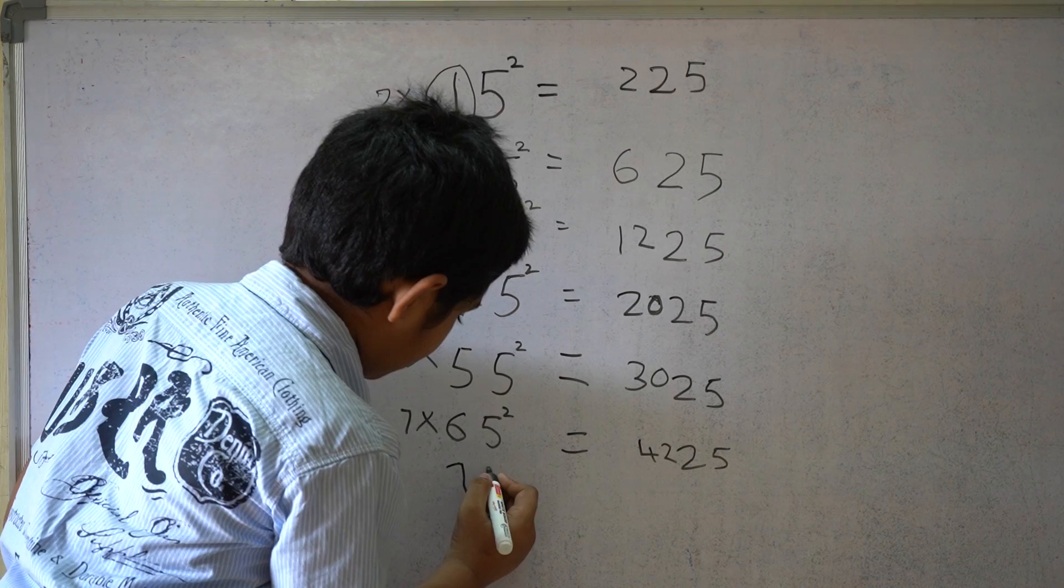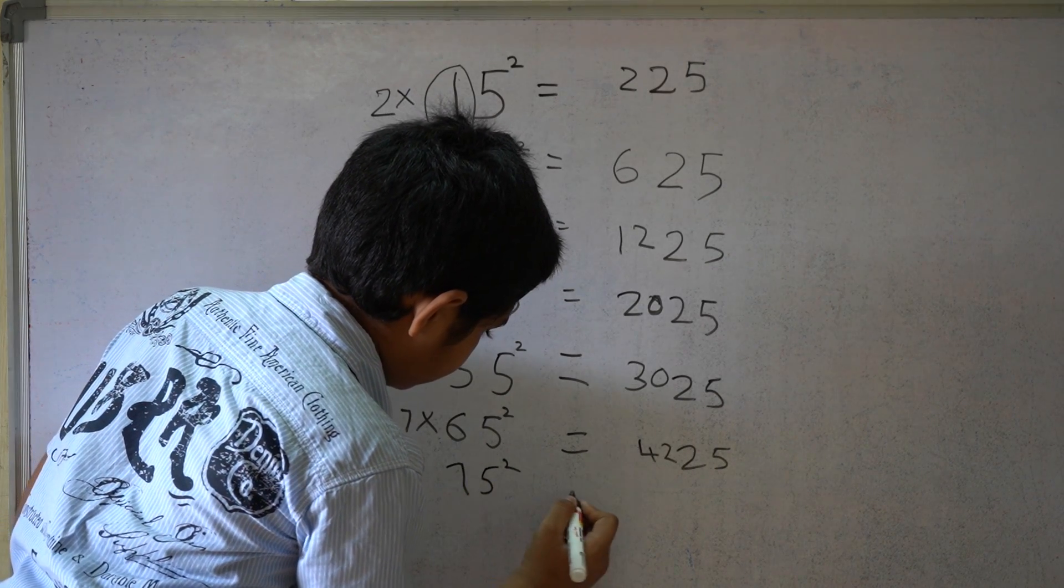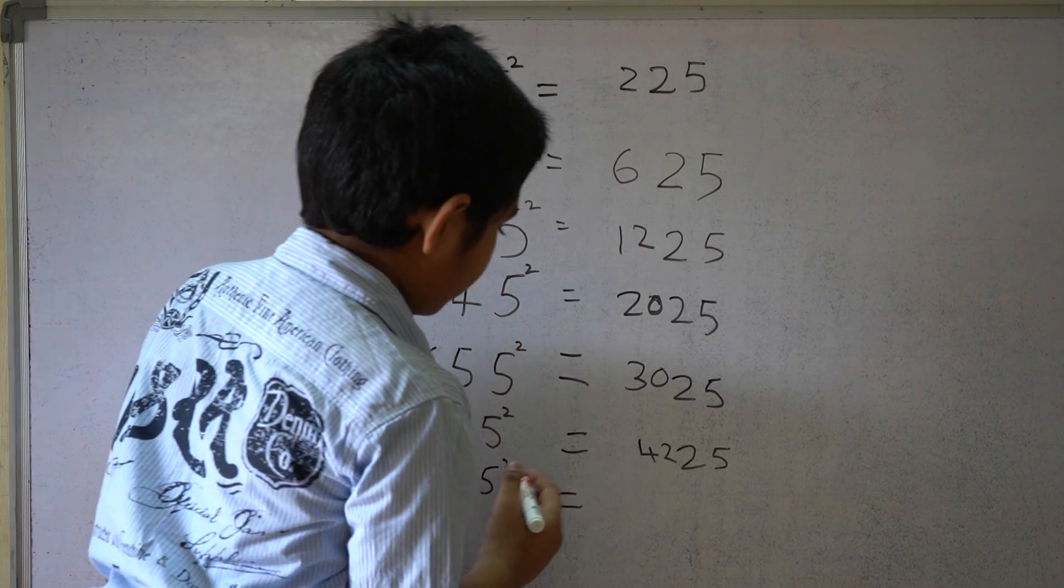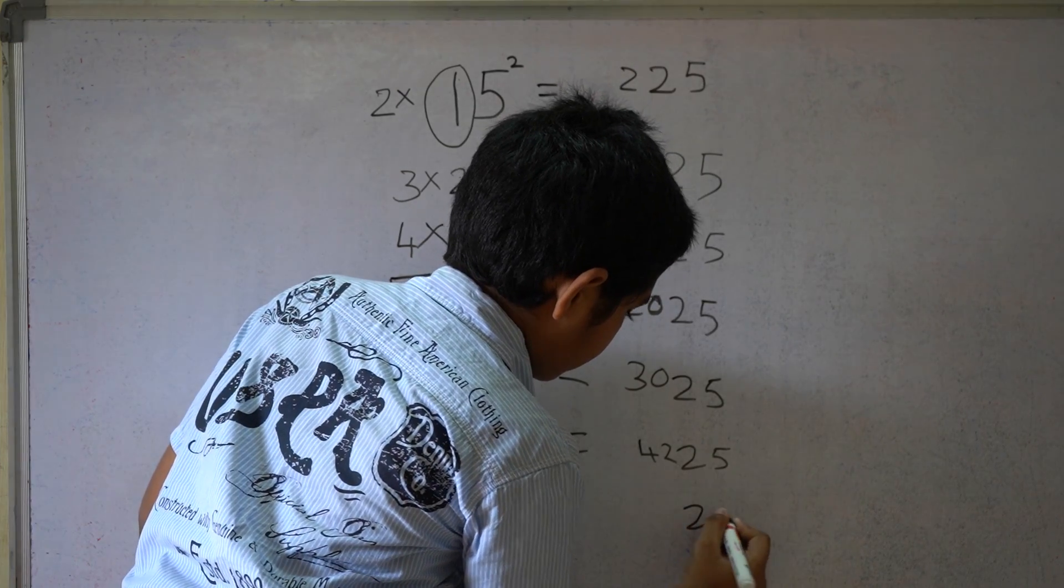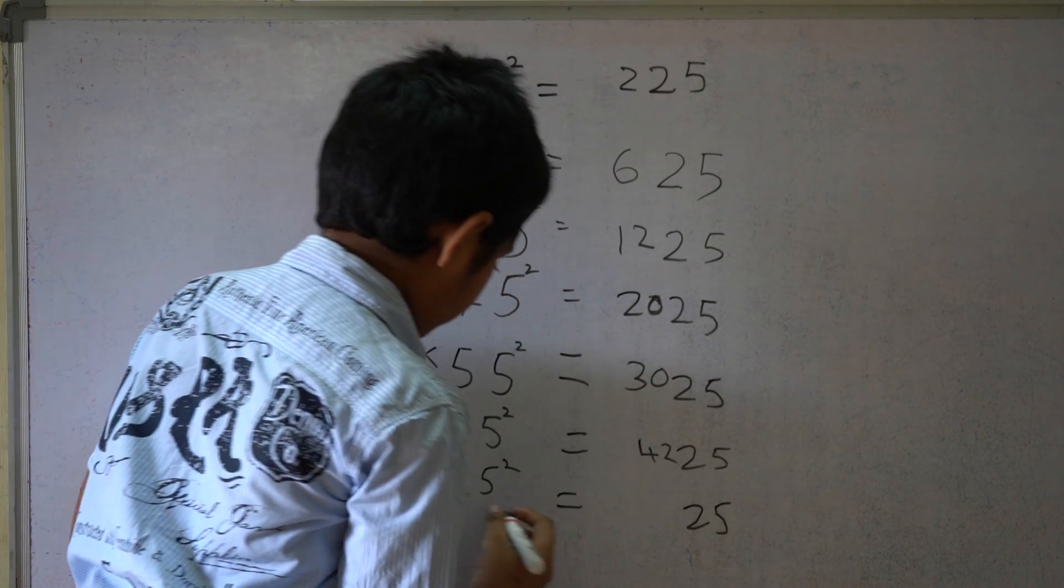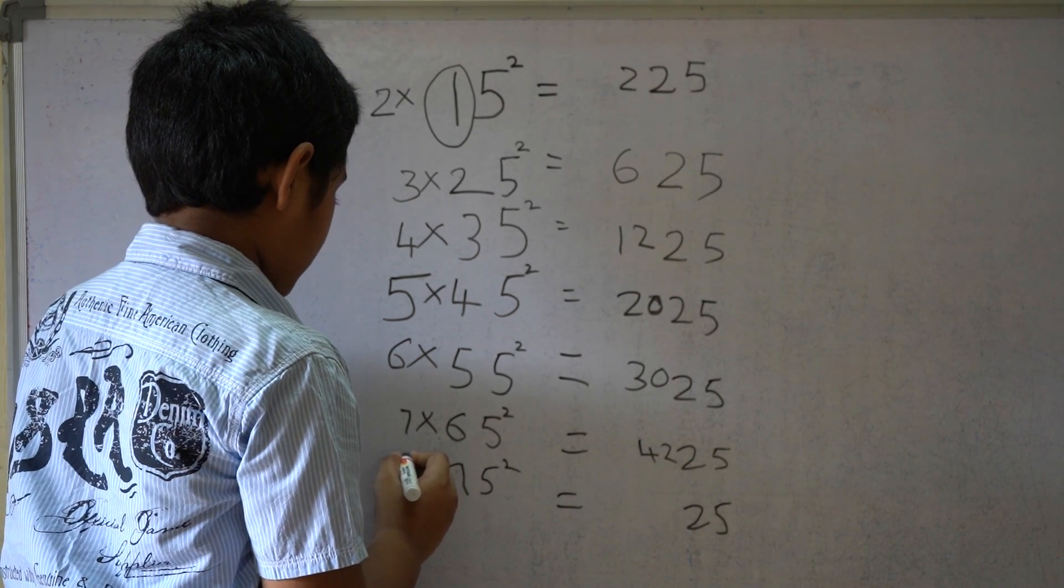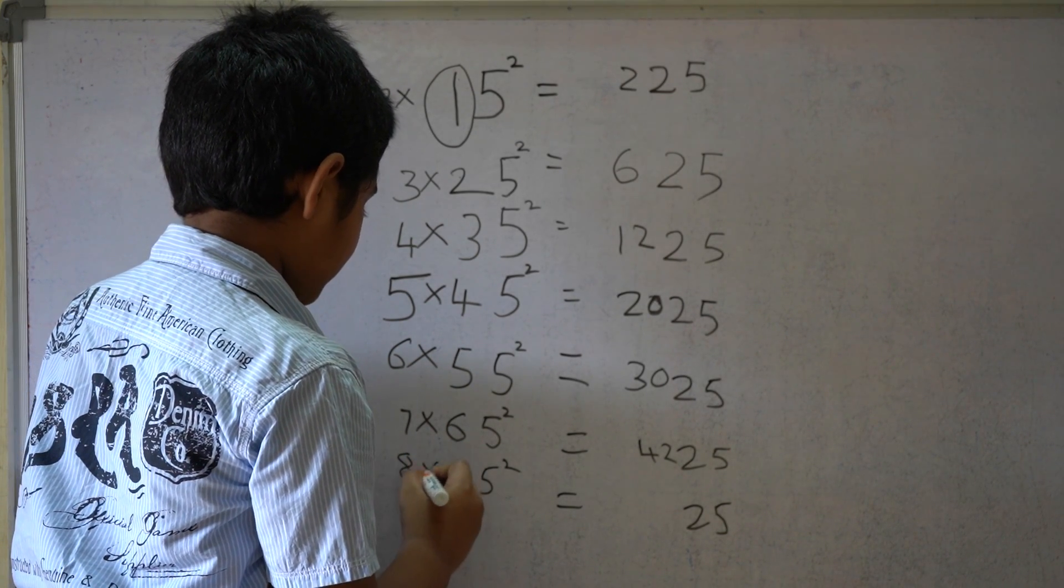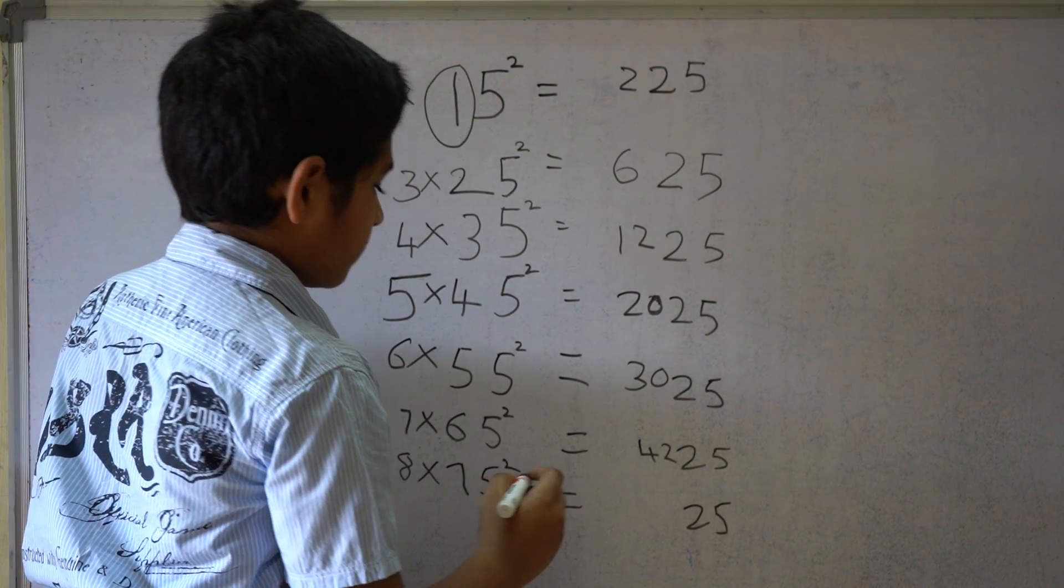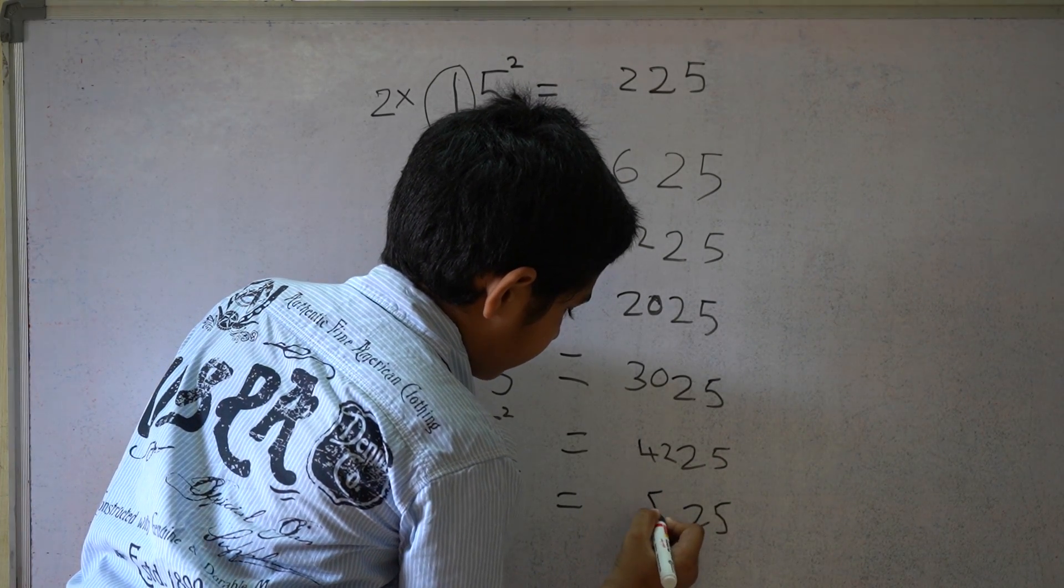75 square. 5 square equals 25. 7 times the next natural number 8 equals 56. So 5625.